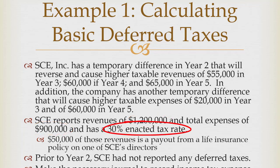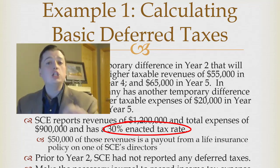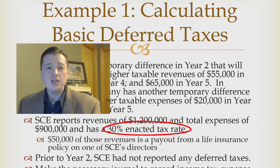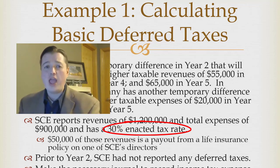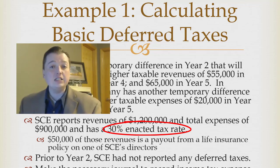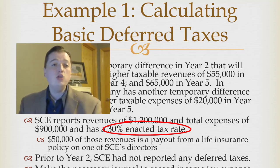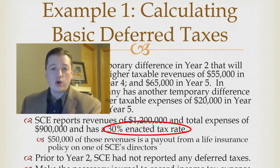There's a 30% enacted tax rate. Let's take a moment on that: an enacted tax rate means it's passed into law. Under US GAAP, you must use the enacted tax rate. Even if Congress has passed it and it's all the way to the president's desk — if he has not signed it by year end, it's not enacted, so you can't use that percentage. You have to go back to the old number and use what's currently law.